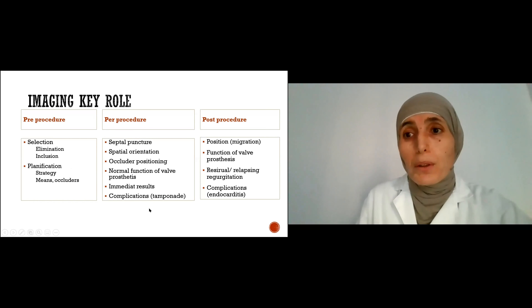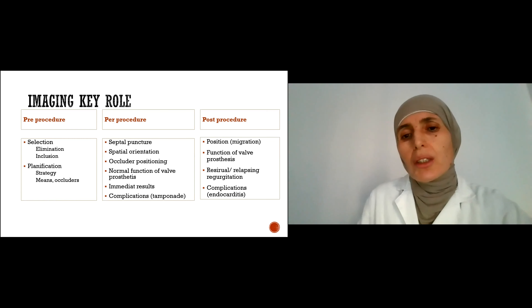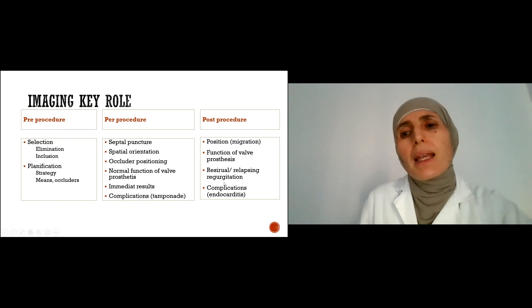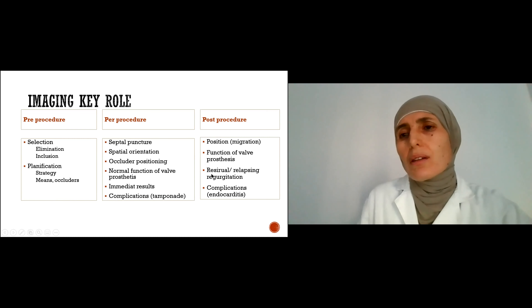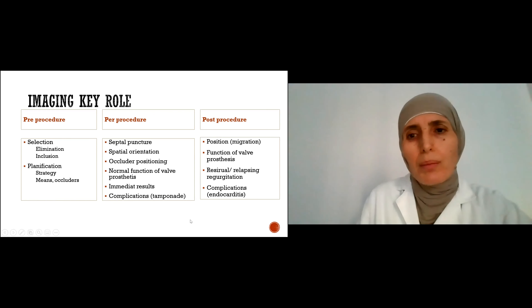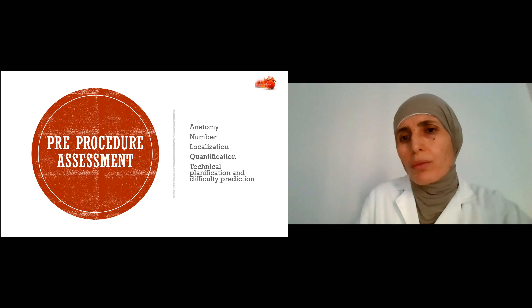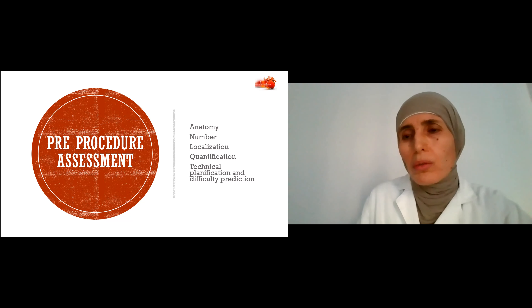Imaging also assesses normal function of the valve prosthesis after positioning the occluder, verifies immediate results, and can detect immediate complications like tamponade. After the procedure, it helps verify the position of the occluder — because there can be secondary embolization — and verifies the function of the valve prosthesis, residual regurgitation, and complications like infective endocarditis. Before the procedure we evaluate anatomy, number of leaks, localization of leaks, quantification of leaks, and plan the procedure.